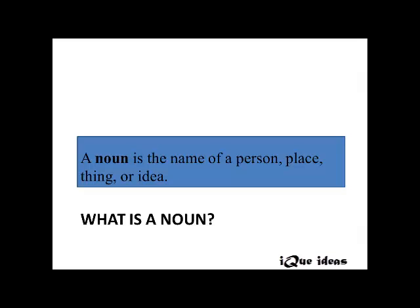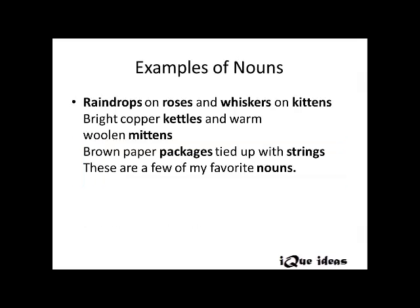A noun is the name of a person, place, thing, or idea. Examples of nouns: raindrops on roses and whiskers on kittens, bright copper kettles and warm woolen mittens, brown paper packages tied up with strings — these are a few of my favorite nouns. The words written in bold here are perfect examples of nouns.